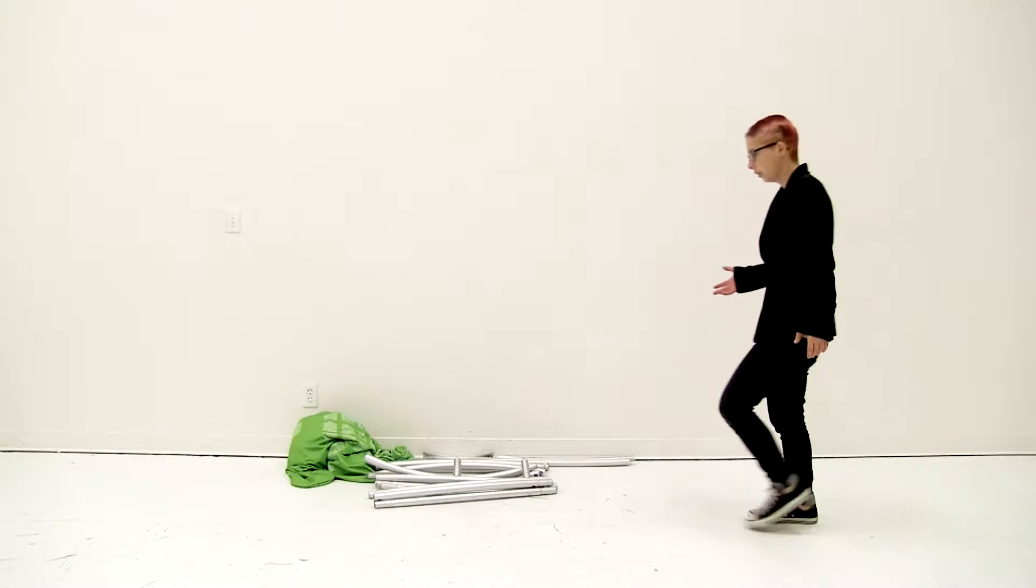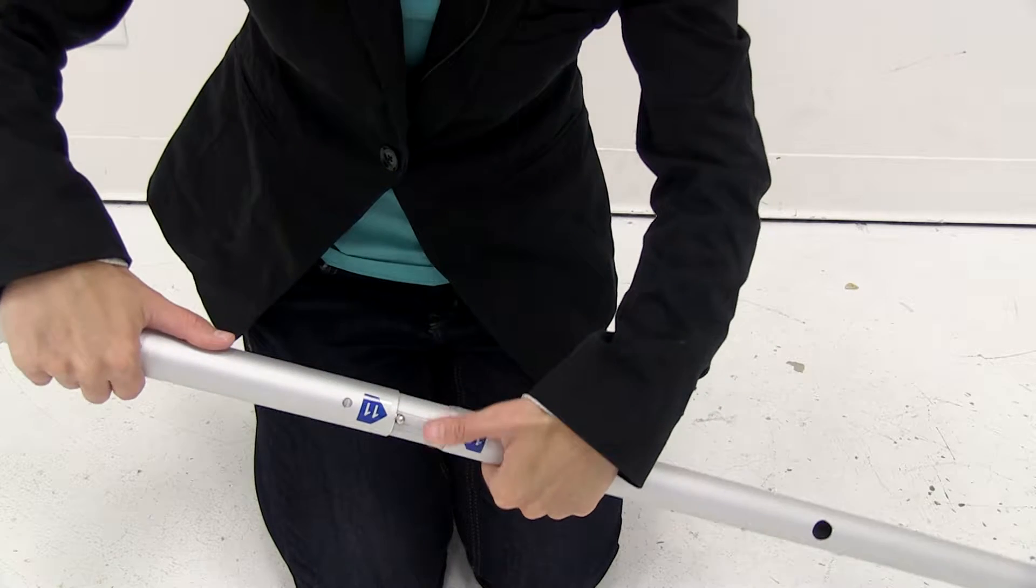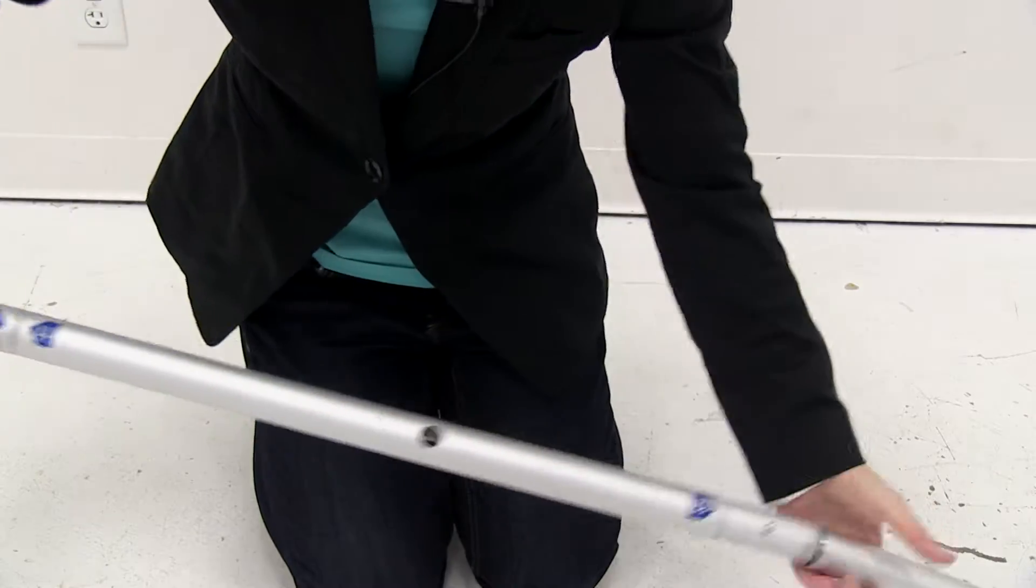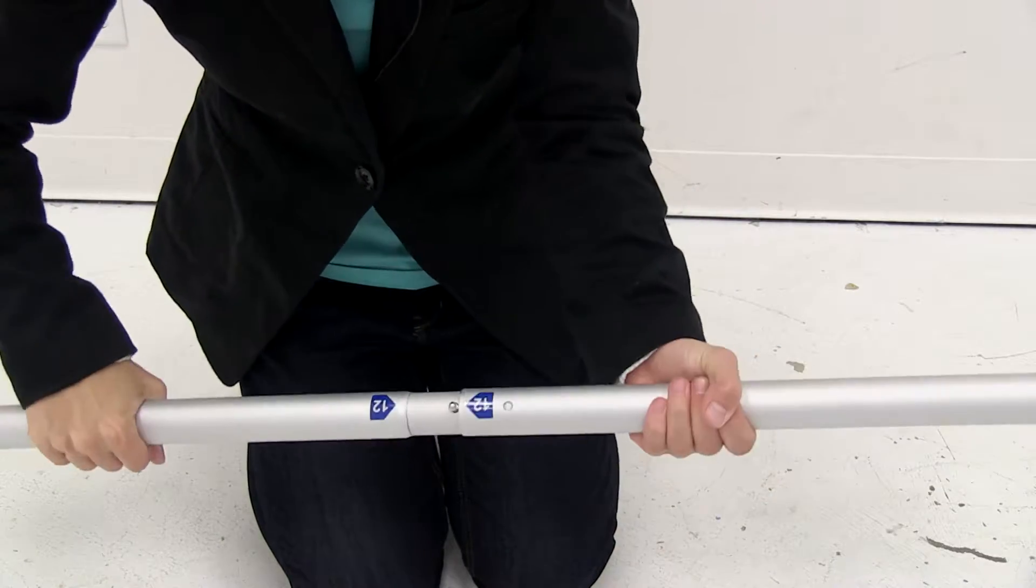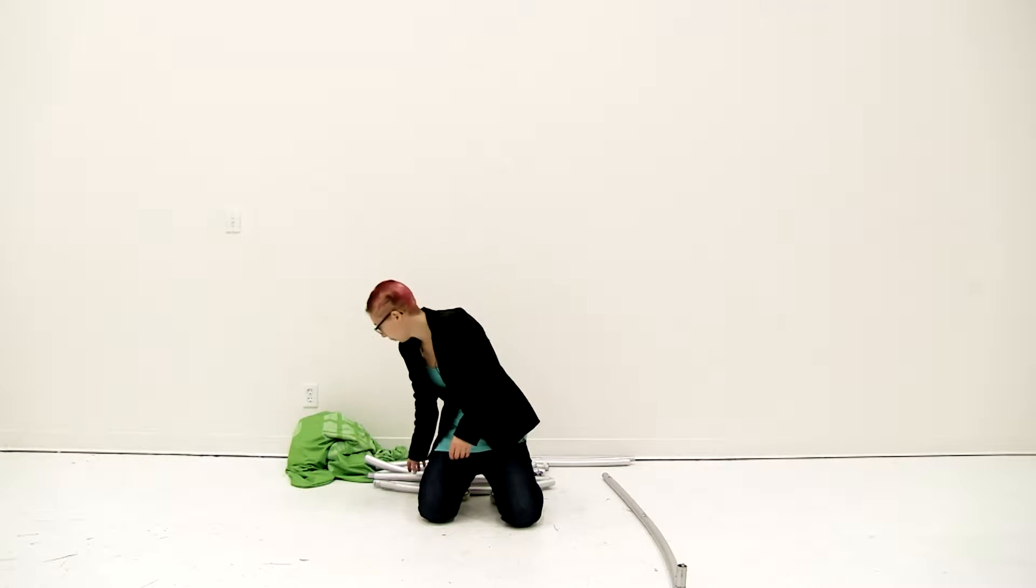The first thing I like to do is connect all the shock corded poles together. You're just going to insert one end of the poles into the other, and using the snap button, secure it into place. You're going to do this for all the shock corded poles.